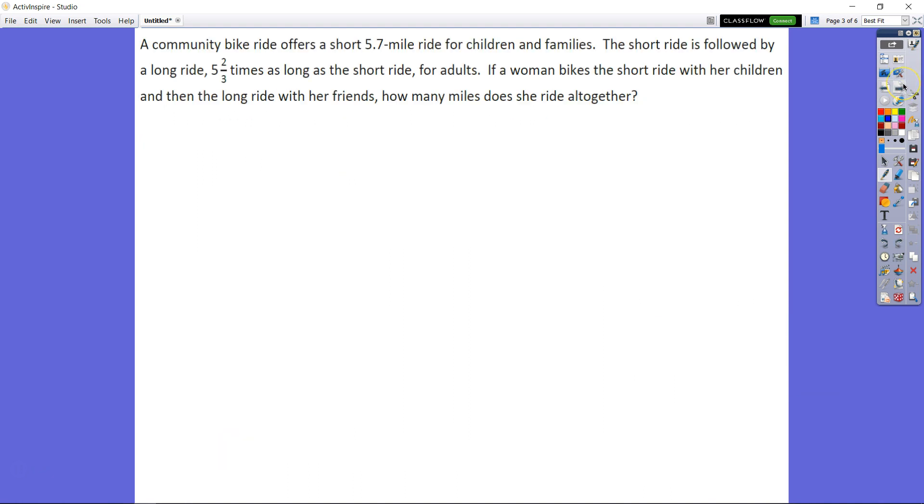Moving on to number three. A community bike ride offers a short ride for children and families, 5 and 7 tenths of a mile, followed by a long ride for adults. It's 5 and 2 thirds times as long. If a woman bikes a short ride with the children and then the long ride with a friend, how many miles can she ride altogether?